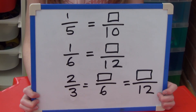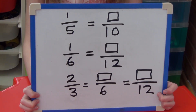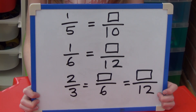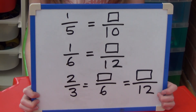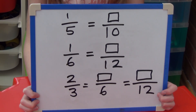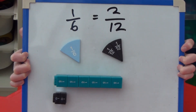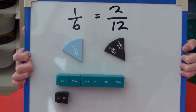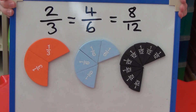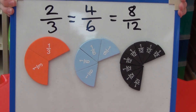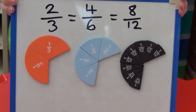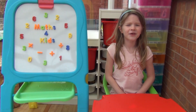Why don't you pause the video and have a go at some yourself. I'm going to give you the answers in three, two, one. One fifth is equivalent to two tenths. One sixth is equivalent to two twelfths. Two thirds are equivalent to four sixths and eight twelfths. I hope you found that useful.